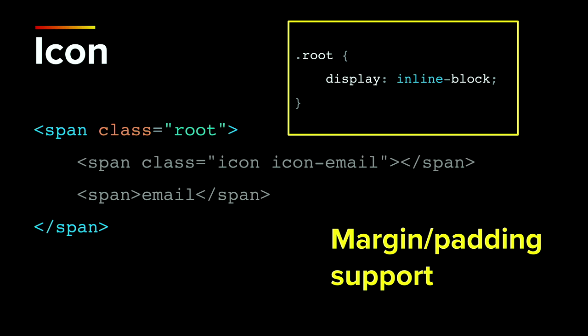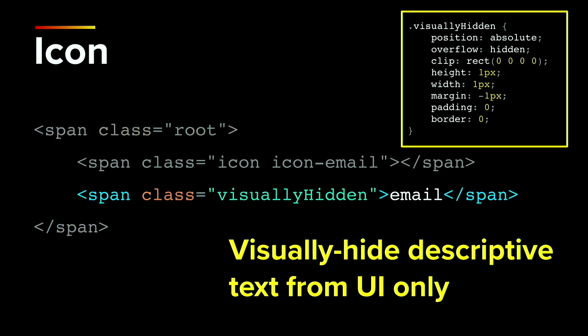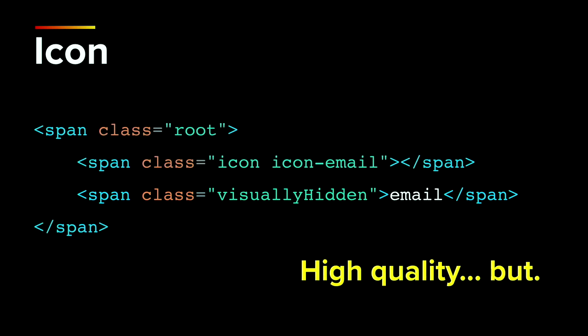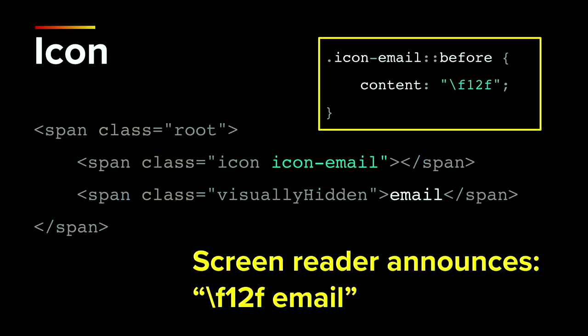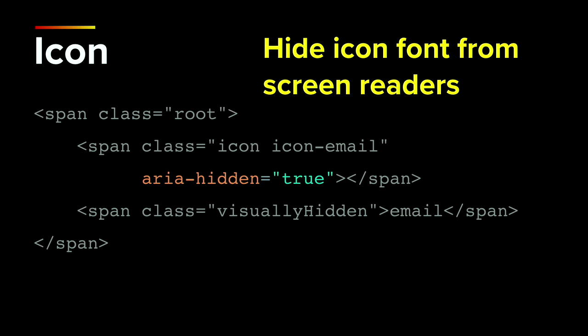On the wrapper span, we add a class to convert the span's native display property of inline to inline-block. This way we can support margin and padding on all four sides of the component rather than just the left or right of a span. Next, we add to the descriptive text span a class called 'visually-hidden.' This will visually hide the descriptive text from the view only, but it will still keep it exposed to screen readers. If you scan this component in a screen reader, it will announce the Unicode characters from the icon font. So we need to hide the icon from screen readers by sprinkling in just a touch of ARIA — adding the aria-hidden attribute set to true.